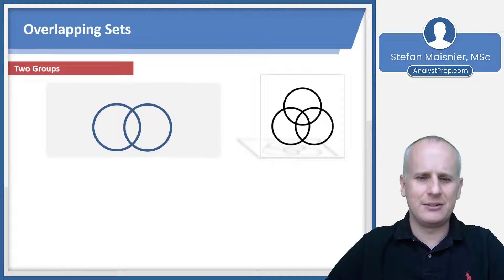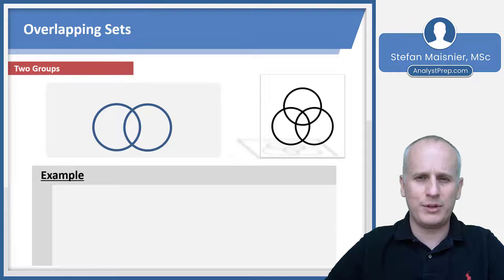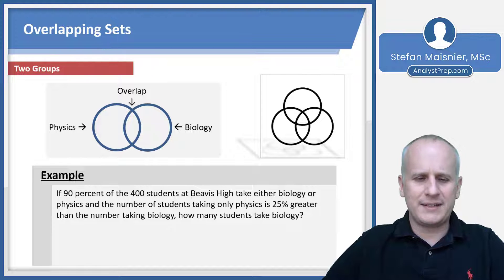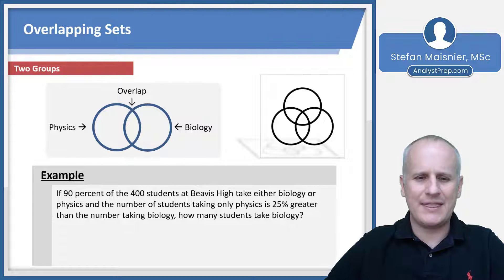So let's take a look at an example here. We'll keep the Venn diagram for reference, but ultimately we're going to rely more on the formula we just saw. If 90% of the 400 students at Beavis High take either biology or physics, and the number of students taking only physics is 25% greater than the number taking biology, how many students take biology?